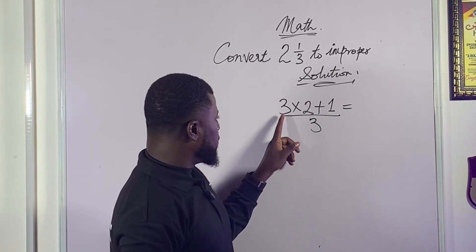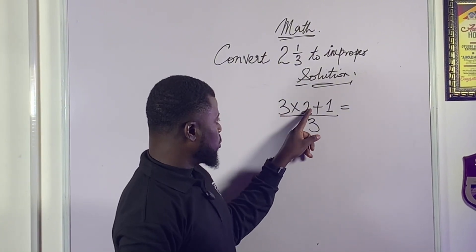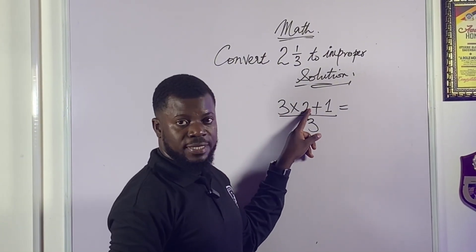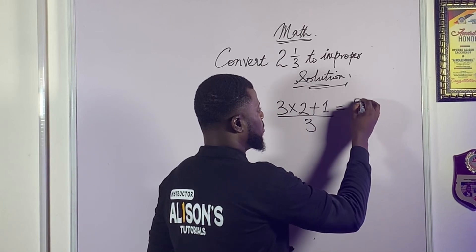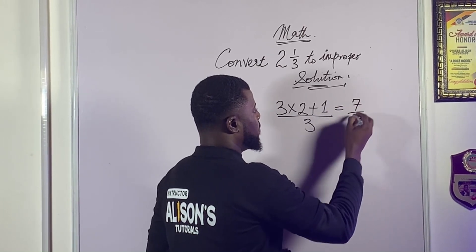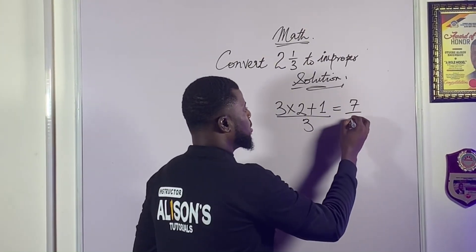Following our board maths: 3 multiplied by 2 is 6, and 6 plus 1 gives us 7. So we have 7 divided by 3.